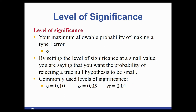Another piece of a hypothesis test is the level of significance — your maximum allowable probability for making a type 1 error. This is your symbol alpha, and it will be given to you in the problem. Typically it's one of three values: 0.10, 0.05, or 0.01.